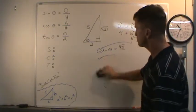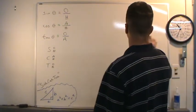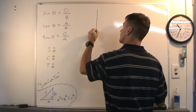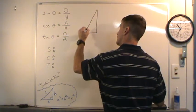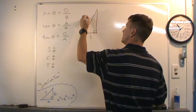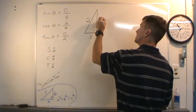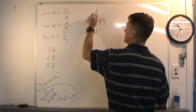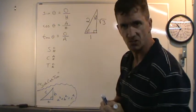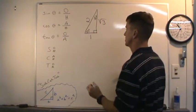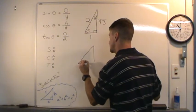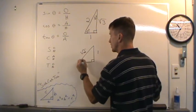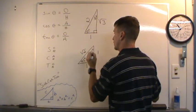Now let's look at the special right triangles — there are two of them. The first one has a short leg of 1, a hypotenuse of 2 (double the short leg), and a long leg of square root of 3. The long leg is opposite 60 degrees and the short leg is opposite 30 degrees — this is the 30-60-90 triangle. The second is an isosceles right triangle: both legs are 1, the hypotenuse is square root of 2, and the angles are 45 degrees and 45 degrees.